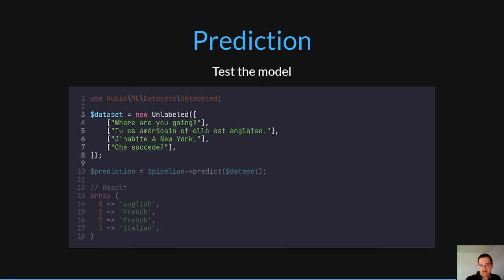First we create an unlabeled array with the sentences you want to detect. Then call the predict method of the pipeline object and pass the dataset you are looking for. As a result you get an array with the predicted values.